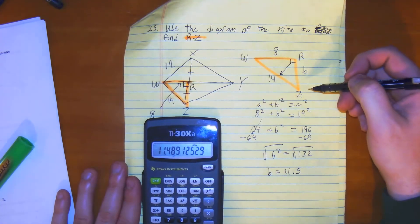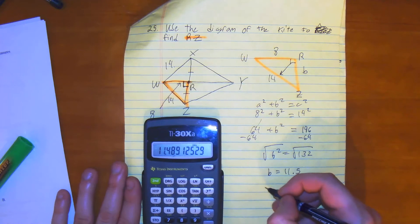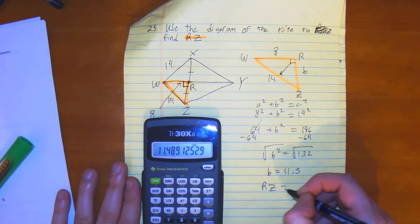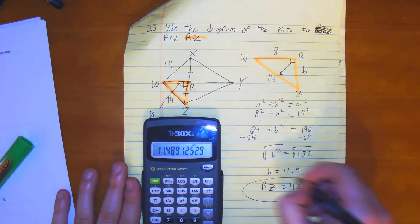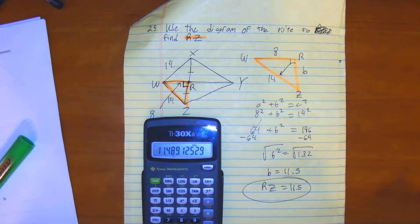And we do know the value of B is going to be RZ. So really RZ is equal to 11.5. And that is our answer for number 25.